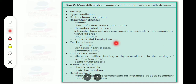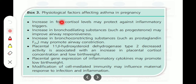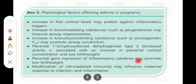The physiological factors affecting asthma in pregnancy include an increase in free cortisol levels, which may protect against inflammatory triggers. There is also an increase in bronchodilating substances such as progesterone, which may improve airway responsiveness, and an increase in bronchoconstricting substances such as prostaglandin F2-alpha, which promotes airway constriction. Placental 11-beta-hydroxysteroid dehydrogenase decreased activity is associated with increased placental cortisol concentration and low birth weight. Placental gene expression of inflammatory cytokines may also promote low birth weight, and modification of cell-mediated immunity may influence maternal response to infection and inflammation.